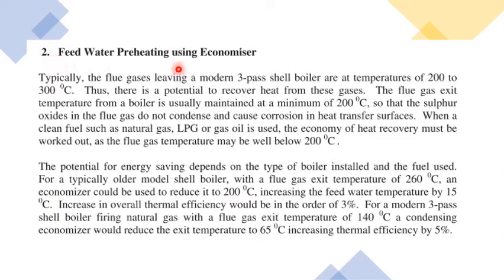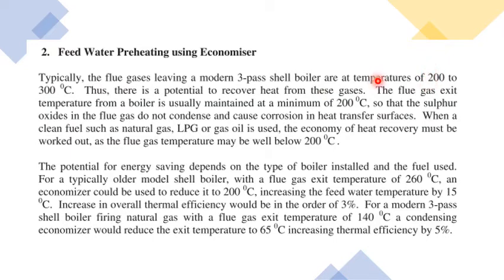The second point is feed water preheating using an economizer. The economizer is equipment used to preheat the feed water entering the boiler using waste heat from flue gas. For example, if the target is to keep flue gas below 200°C but the temperature is 300°C, the extra 100°C can be used to preheat the feed water.